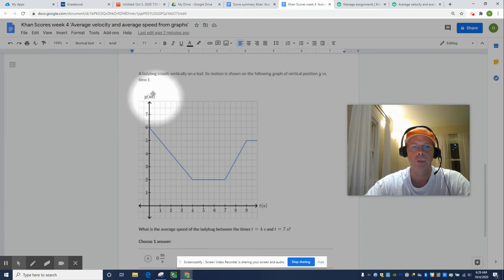All right, so as they stated, the dependent variable is vertical position measured in meters. The independent variable is time measured in seconds.